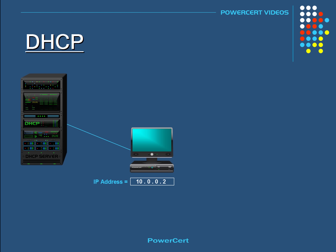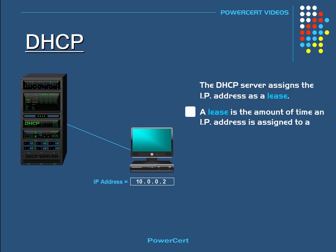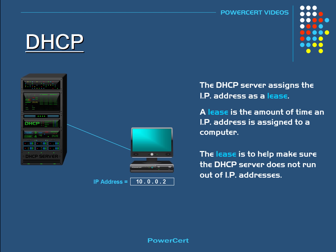When computers obtain an IP address from a DHCP server, the server assigns the IP address as a lease. The computer doesn't actually own the IP address — it's a lease. A lease is the amount of time an IP address is assigned to a computer. For example, the lease could be for one day. The reason for the lease is to help make sure that the DHCP server does not run out of IP addresses in its scope.